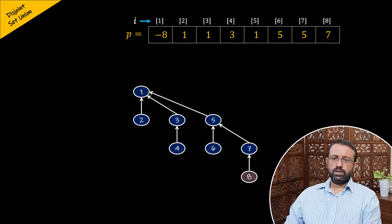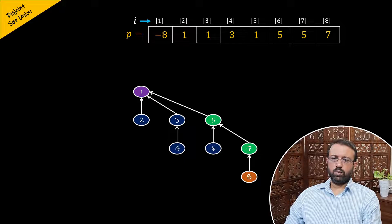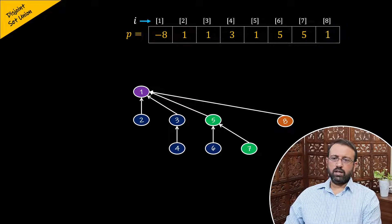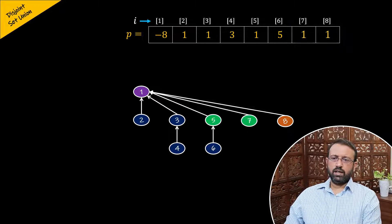Let us perform the find operation on element eight using the collapsing rule. The parent of node eight is node seven, the parent of node seven is node five, and the parent of node five is node one, which is the root node. So we found the root of the tree, node one, to which node eight belongs. According to the collapsing rule, we make node one the parent of node eight, then also make node one the parent of node seven. Node one is already the parent of node five, so there is nothing to be done.